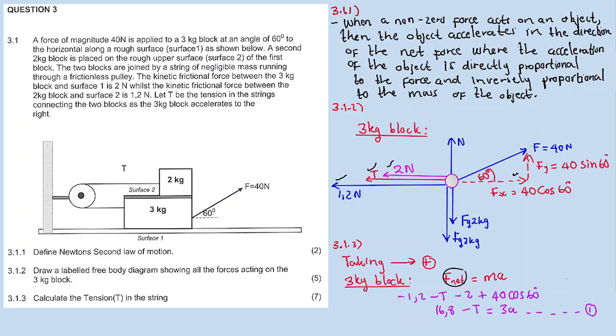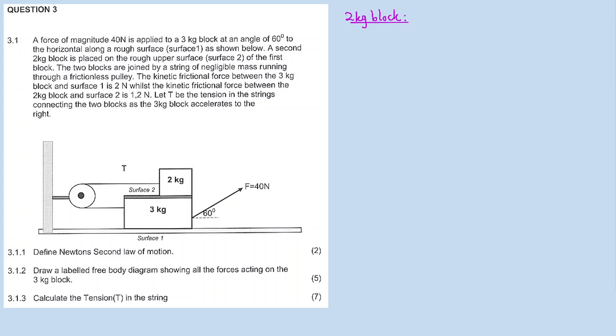We do the same for the second block, the 2kg block. I need a free body diagram for the 2kg block to set up our second equation. The 2kg block has four vectors: the weight, the normal force, the frictional force of 1.2 to the right, and the tension. The tension is to the right, but the 2kg block is being dragged to the left. The normal force is up, force of gravity down.